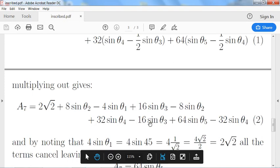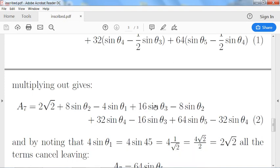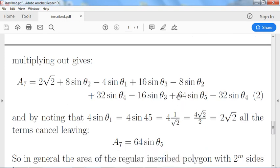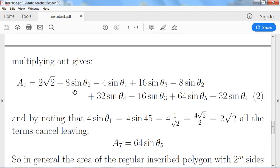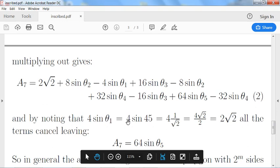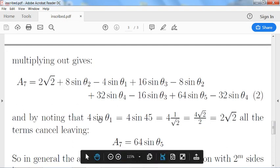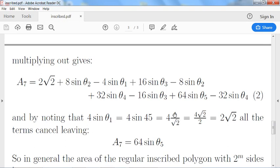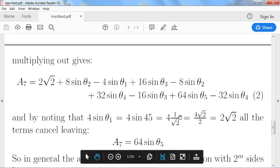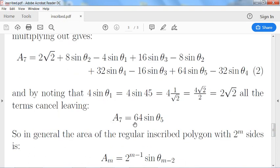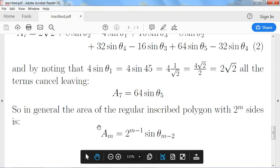And then the 16 sine θ_3 is cancelling with the 16 sine θ_3, and actually everything cancels out apart from the very last term 64 sine θ_5. And by noticing that this term 4 sine θ_1 is the same as 2√2, so 4 sine θ_1 is 4 times sine 45 which is 4 times 1 over √2, multiply top and bottom by √2 and we get 2√2. So those terms cancel and we're left with A_7 is 64 sine θ_5.